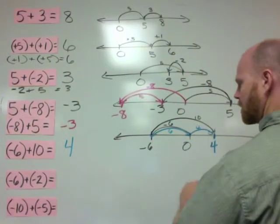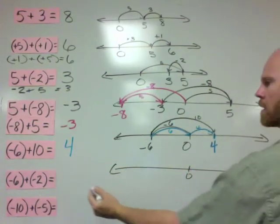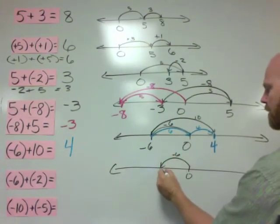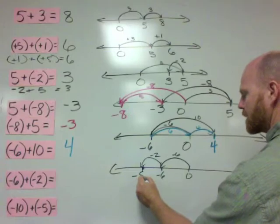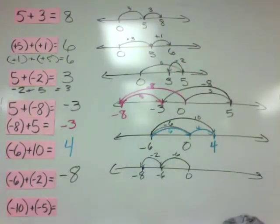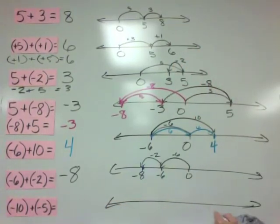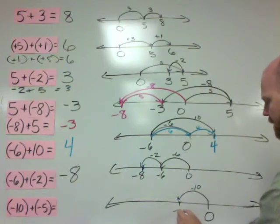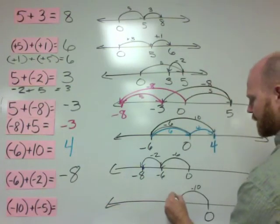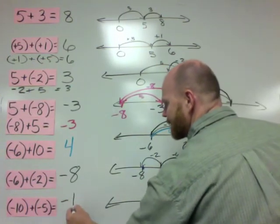Next: negative 6 plus negative 2. Draw another number line, here's 0. Negative 6 — 6 hops to the left puts us at negative 6. Negative 2 is 2 hops to the left, which places us at negative 8. And then the last one: negative 10 plus negative 5. I'll put 0 way over here. Negative 10 — 10 hops to the left puts us at negative 10. Negative 5 is 5 more hops to the left, and that places us at the answer of negative 15.